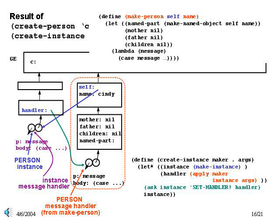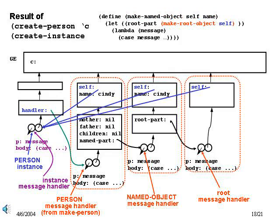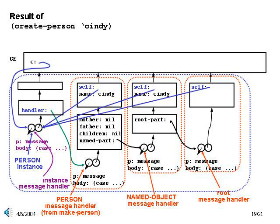One additional detail: after the makePerson procedure has been called to generate the person handler, back in our instance frame, we bind the variable handler to this person handler. This is done by the line shown in the createInstance procedure, which uses the setHandler message in the instance handler. After this, our instance message handler knows how to pass along any messages to the person handler when asked. Our object is not quite complete yet. Inside makePerson, we have a call to makeNamedObject in order to inherit the state and behavior of named objects. This creates some local frames and a local message handler for the named object. And inside the makeNamedObject procedure, we have a call to makeRootObject, which results in the creation of the root object message handler. So the overall person object generated by the innocent-looking call to createPerson is finally shown here. In our example, this person instance eventually gets bound to the variable C in the global environment.